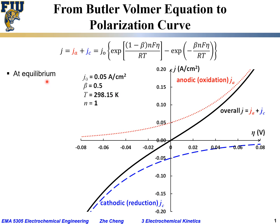At equilibrium, the overpotential on the horizontal axis is zero. The vertical axis is net current density. At zero overpotential, the overall current is zero. However, the anodic current density equals J₀ (positive) and the cathodic current density equals −J₀. Their summation gives zero net current density, confirming no net overall reaction at equilibrium.